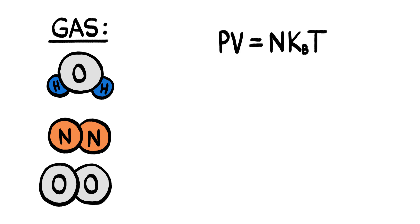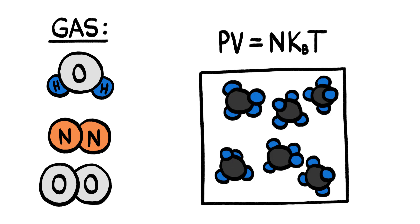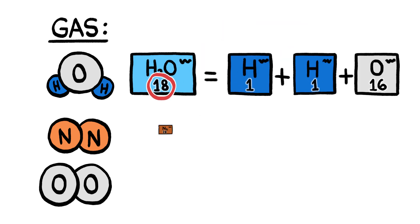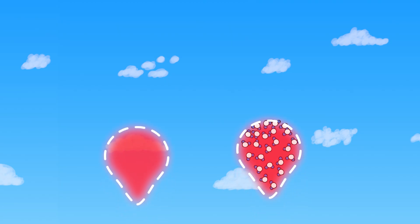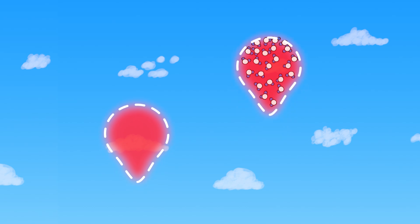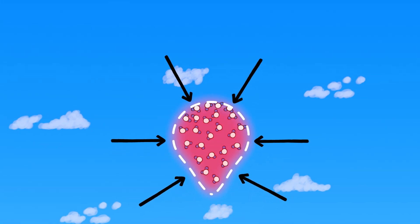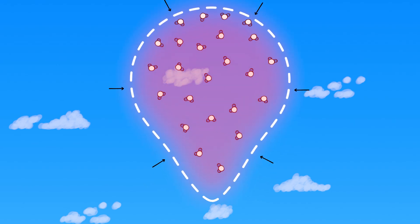Basic physics dictates that a given volume of gas has the same number of molecules regardless of what those molecules are. And water is made of H plus H plus O, which is lighter than both two N's and two O's. So warm, humid air is even more buoyant than warm, dry air. As the invisible balloon goes up, the falling pressure outside allows it to keep ballooning, which spreads out its internal heat and lowers its temperature.